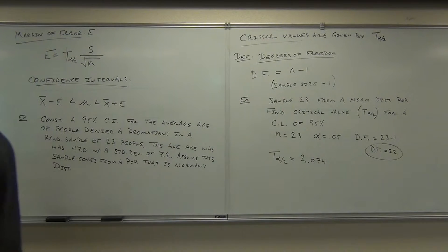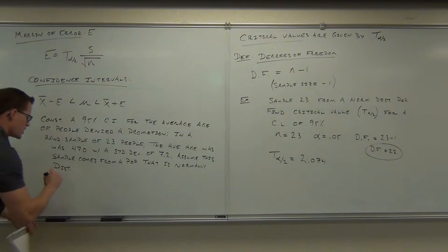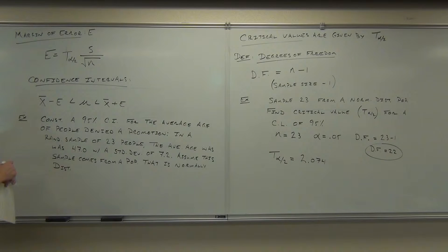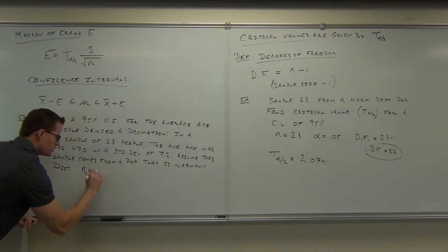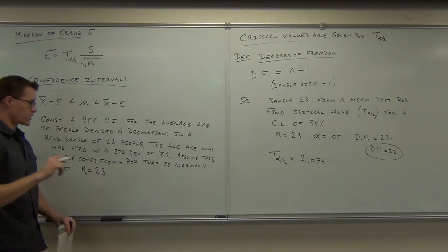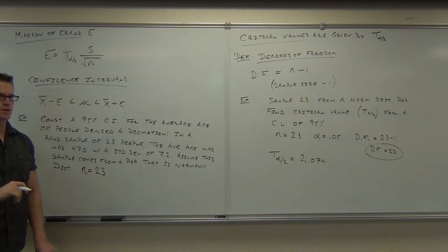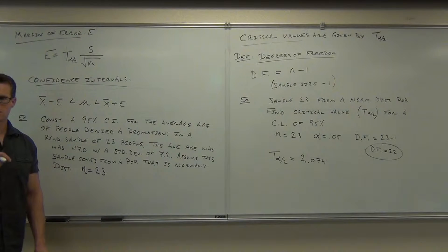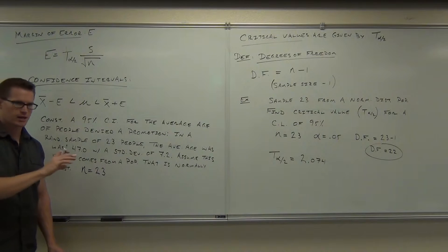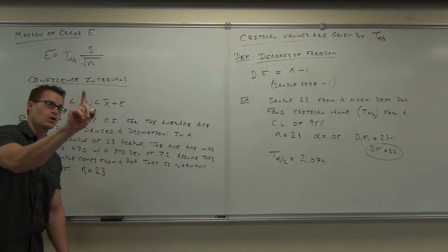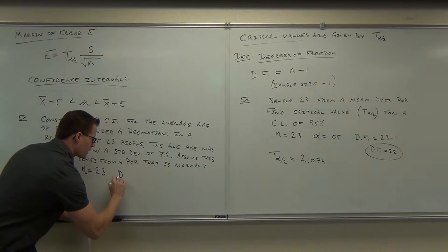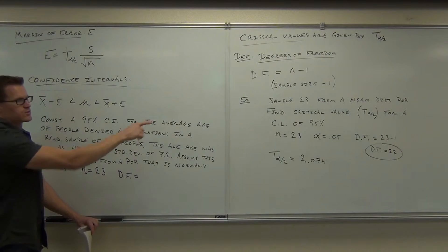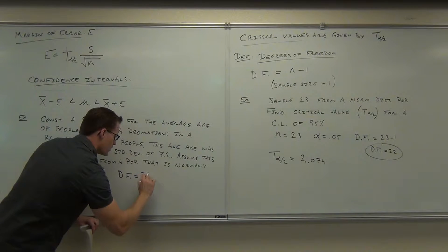Can you tell me what my N is? N is 23. From my N, can you tell me my degrees of freedom? Remember, N does not equal degrees of freedom — it's different by exactly 1, all the time. So what is my degrees of freedom? 22. We just did that on the board — degrees of freedom is 22.